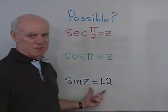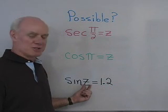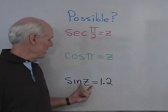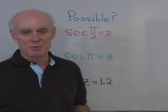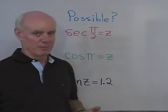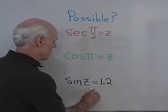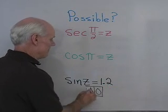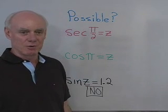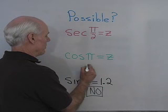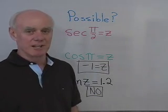I want to know if each of these statements is possible. Is there an angle z so that sine z equals 1.2? No — the sine function always comes out between −1 and 1, no matter what angle you put in. It can never be 1.2. How about cosine of π equals z? Cosine of π is −1, so z equals −1, and that will work.